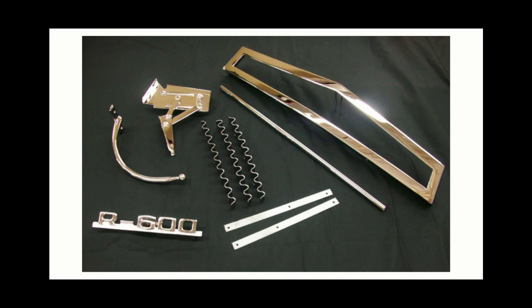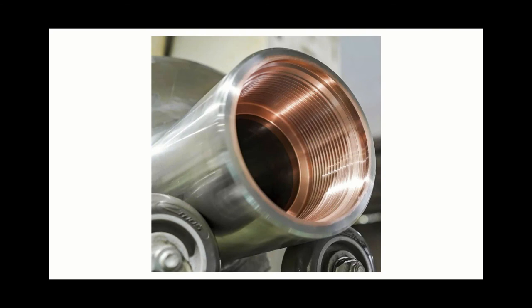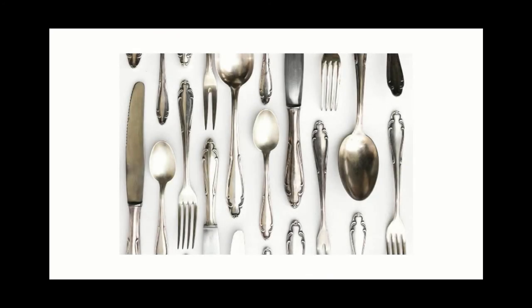They're lighter, cheaper, rust-proof, and don't require any polishing after plating. Copper plating is primarily used to prevent case hardening of steel on specified parts. Silver plating is used on tableware, electrical contacts, and engine bearings.